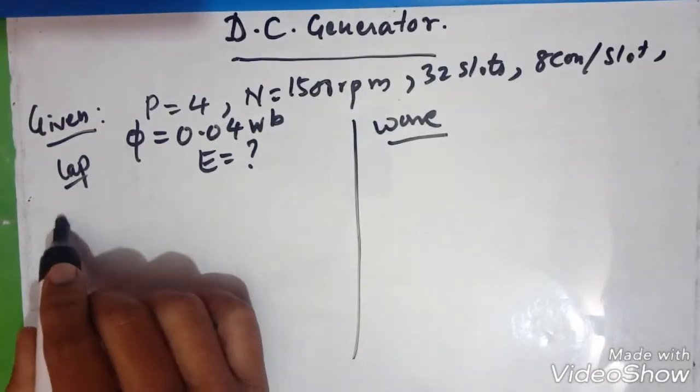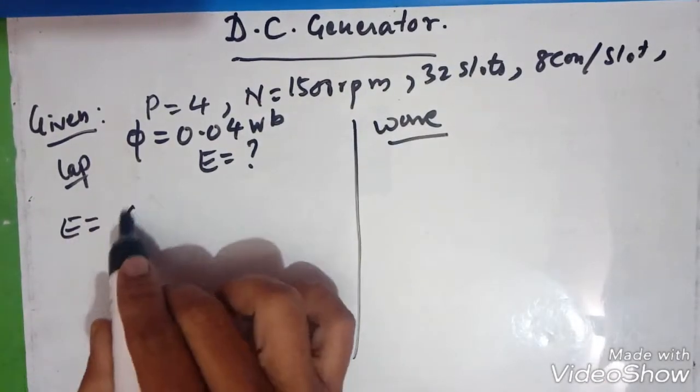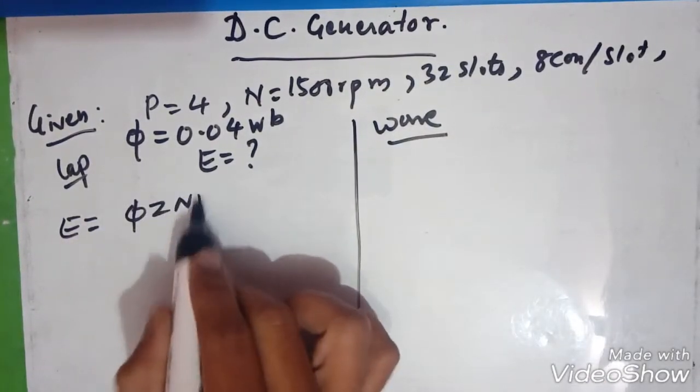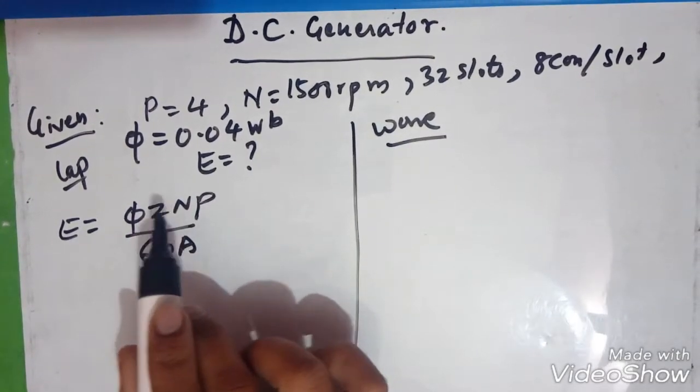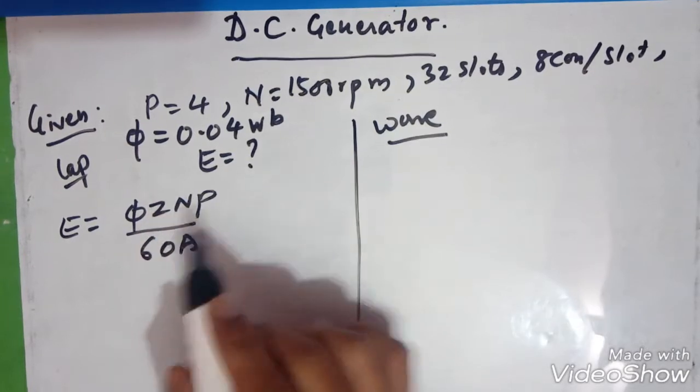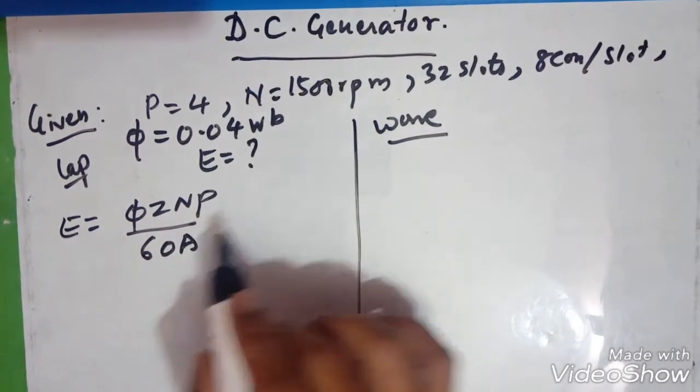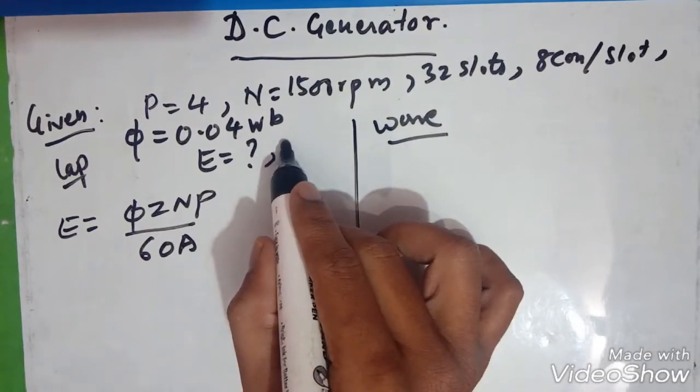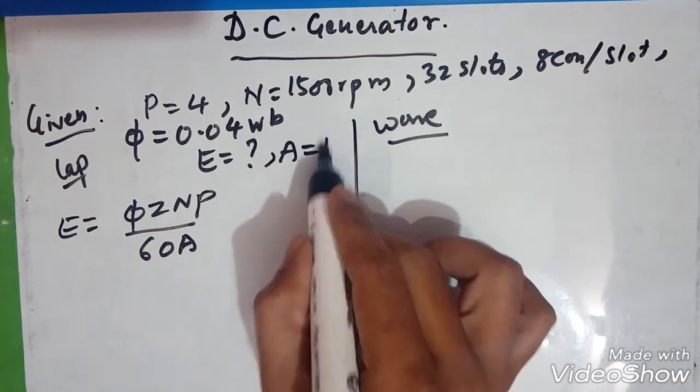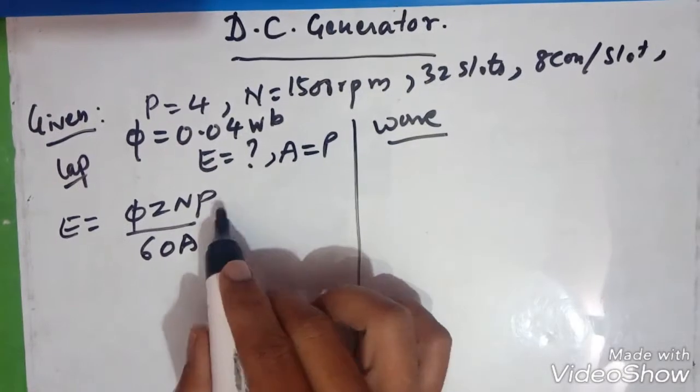For the lap winding, we have a formula: Φ Z N P divided by 60 A, where Z is the number of conductors. So let us substitute the values. In the case of lap winding, A is equal to P. Substitute it.